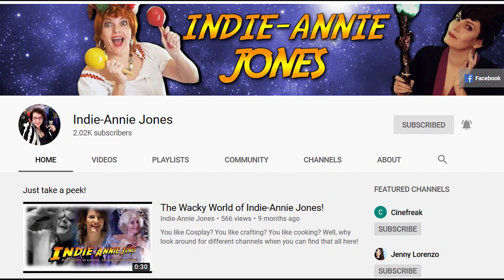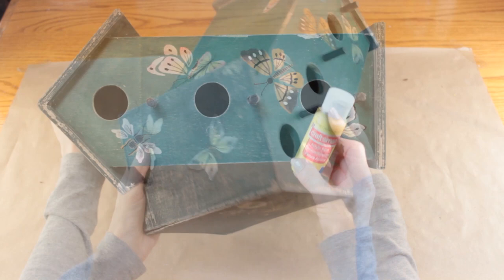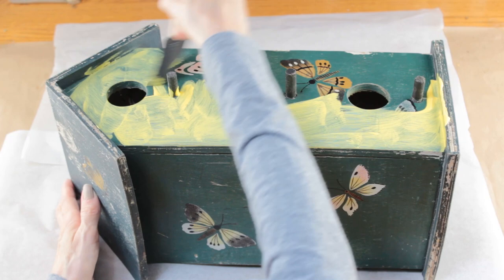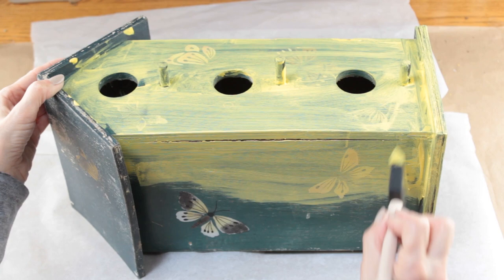I'm starting my project by using yellow acrylic paint and painting my birdhouse. I needed to give this birdhouse three coats of this pretty yellow paint to hide those butterflies on this dark green background.